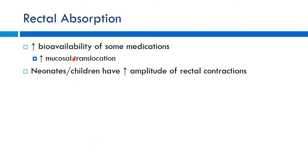Rectal absorption is increased due to easy translocation through the mucosal layer. Acetaminophen suppositories are one of the most common medications given this way, especially for fever in young children — particularly useful when oral medications are difficult to administer. If you've ever had to give oral medications to a kid, you know the medication ends up everywhere. Rectal administration is often an easier alternative.